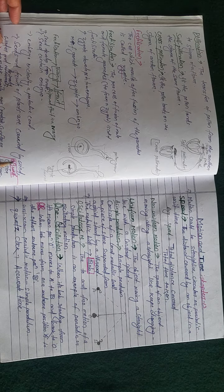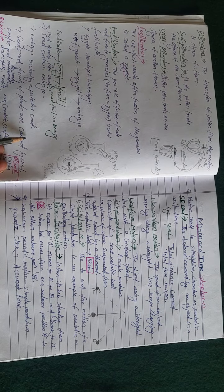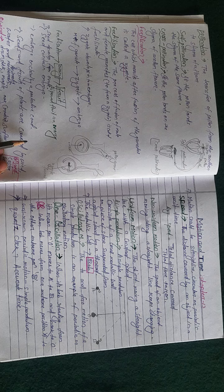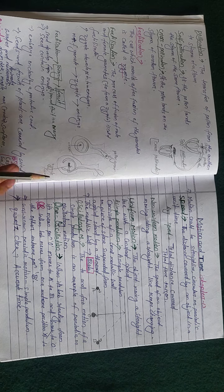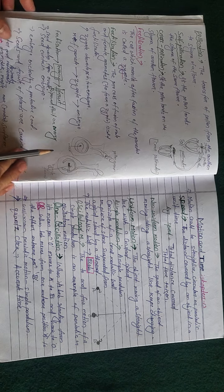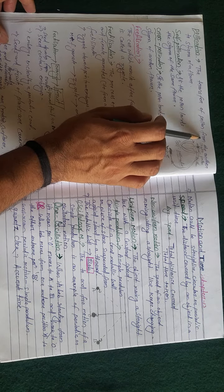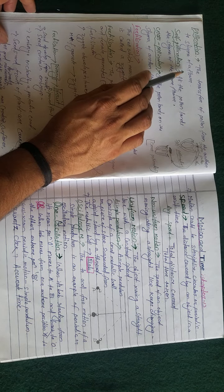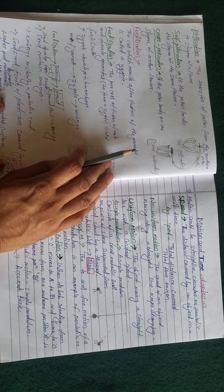What do you mean by pollination? The transfer of pollen from one anther to the stigma of a flower — from one anther to the stigma of a flower.